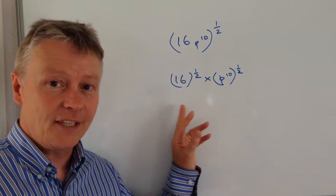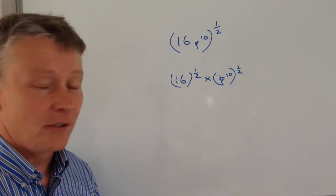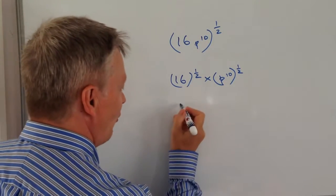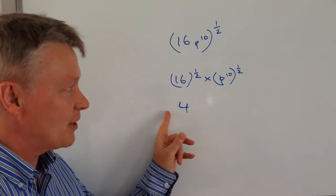Well, the first thing is fairly easy because the square root of 16 is actually 4. Okay, so that's the first bit of this.